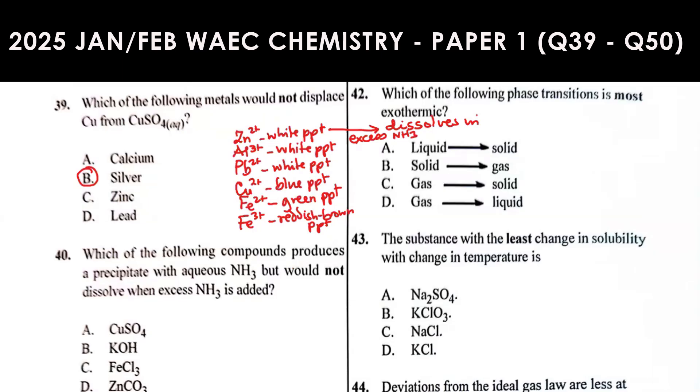Based on our analysis, this guy here is copper 2. This also dissolves in excess ammonia to form a deep blue solution. These are the two that dissolve in excess ammonia. While one gives a colorless solution, this one gives a deep blue solution.